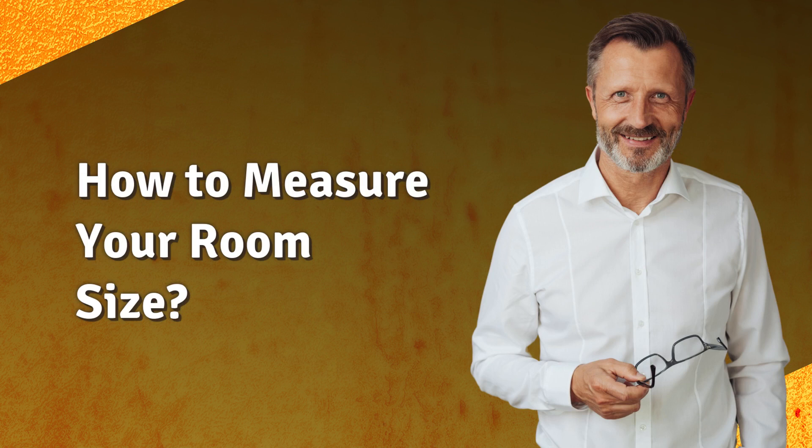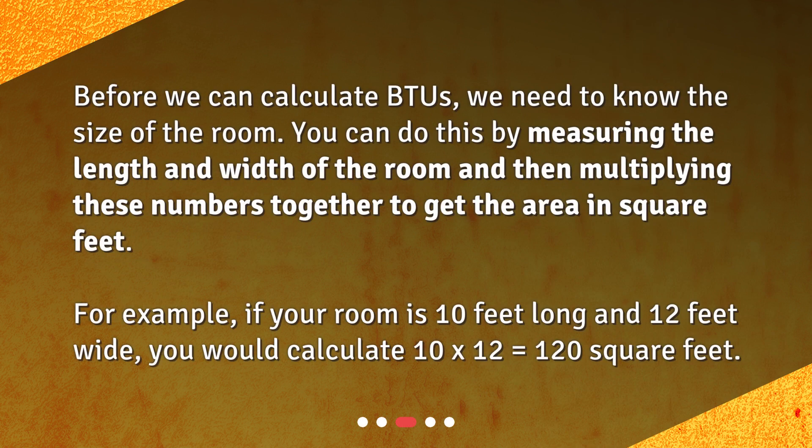How to measure your room size. Before we can calculate BTUs, we need to know the size of the room. You can do this by measuring the length and width of the room and then multiplying these numbers together to get the area in square feet. For example, if your room is 10 feet long and 12 feet wide, you would calculate 10 times 12 equals 120 square feet.